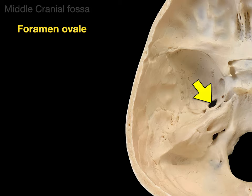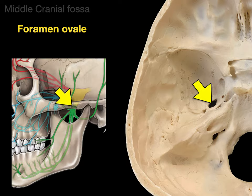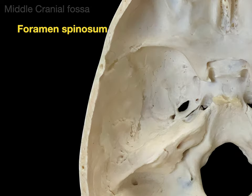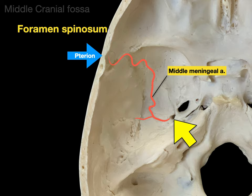The foramen ovale gets its name for an opening that is oval. The V3 branch of the trigeminal nerve traverses the foramen ovale, entering the infratemporal fossa and then the oral cavity — so V2 goes to the maxilla and V3 goes to the mandible. The foramen spinosum is a very small opening traversed by the middle meningeal artery, a branch of the maxillary artery, which supplies the dura mater. This courses deep to the pterion — so if you crack the pterion, that thin suture region, you could rupture the middle meningeal artery and cause an epidural hematoma.